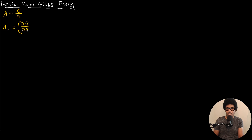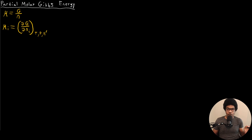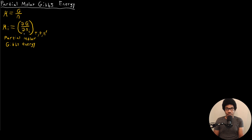We take the partial derivative of the Gibbs free energy with respect to the number of moles of component i, holding the natural variables of the Gibbs free energy constant — that is, temperature and pressure — and also holding the number of moles of every other component constant. This is the partial molar Gibbs energy, and this is how we're going to define the chemical potential in more general terms.